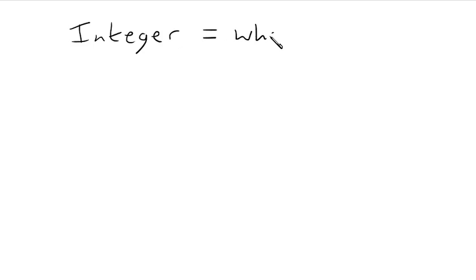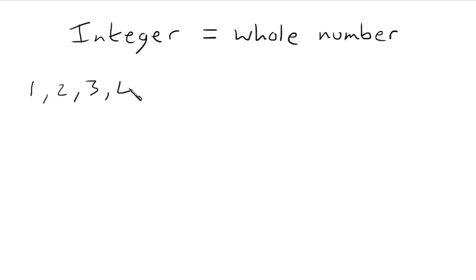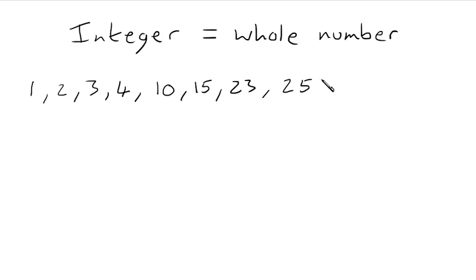In this short video, I'm going to talk to you about integers and place value. An integer is a whole number. So there are lots of integers, starting with 1, 2, 3, and so on, and any other whole number like 10, 15, 23. These are all integers. So 256 is an integer, as is 20,403. All of those are integers — those are all positive integers.